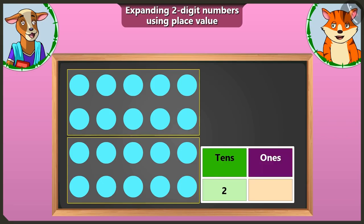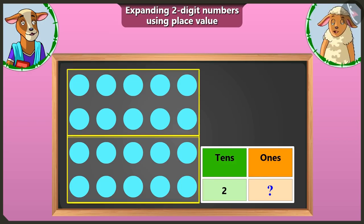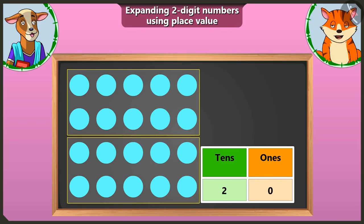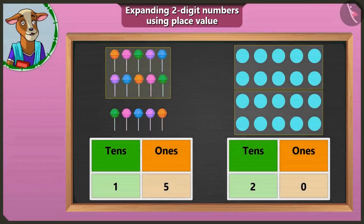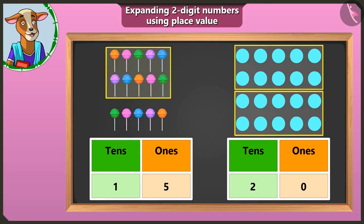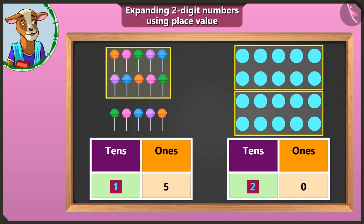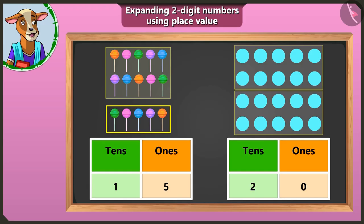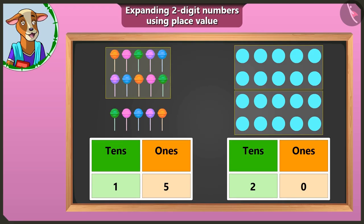That's true, Billy. And what do we write in the ones box? There is not even one circle left, so we will write zero in the ones box. Now, tell me — what number will it make? It makes number twenty. Well done, Billy. So children, remember: as many groups of tens are made, you have to write that number in the tens box. The remaining number will be written in the box for ones. If no number is left, then write zero in the box for ones.